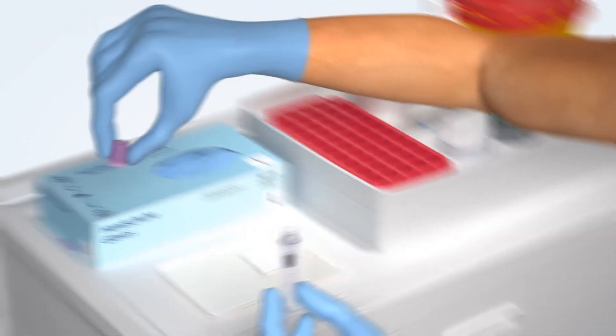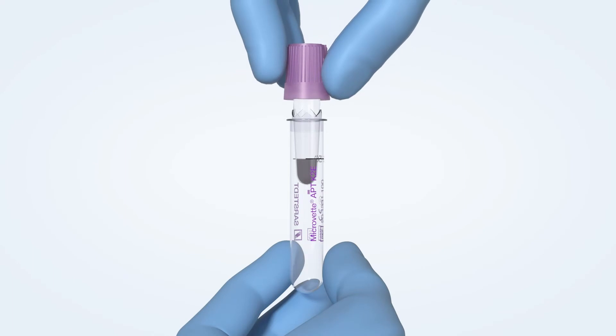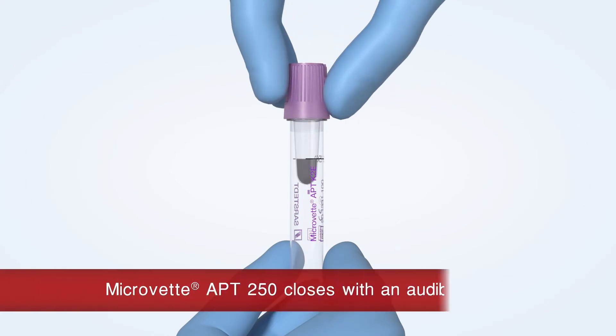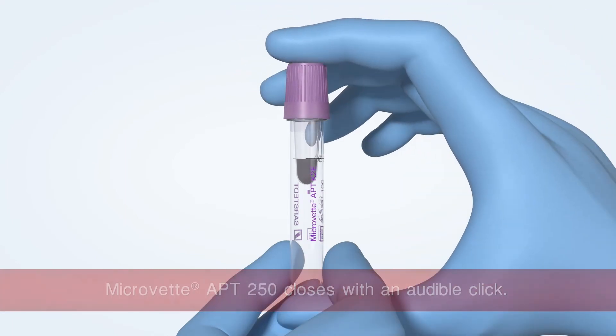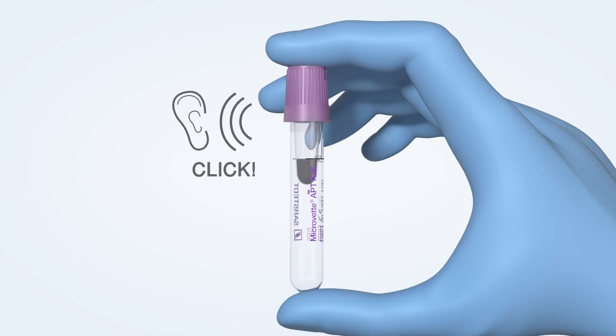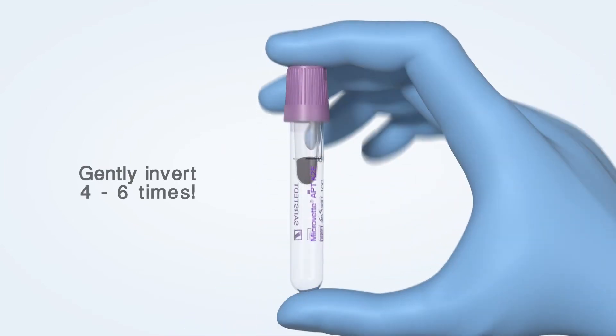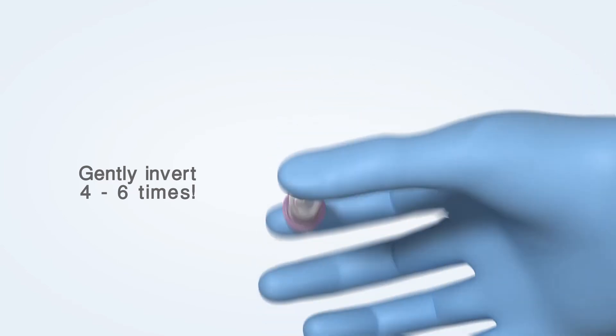Take the cap and close the Microvette APT with an audible click. Gently invert the Microvette APT four to six times.